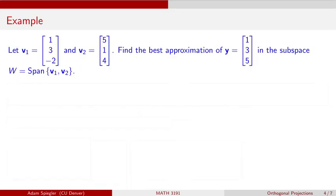Let's apply the best approximation theorem to this example. Consider two vectors v1 and v2: v1 is the vector (1, 3, −2) in R^3, and v2 is the vector (5, 1, 4) in R^3. The subspace W is spanned by v1 and v2. If you check by taking the dot product, you can verify this is an orthogonal basis for W — the dot product gives zero. We want to find the best approximation for the vector y = (1, 3, 5) in R^3, which does not sit in this subspace.